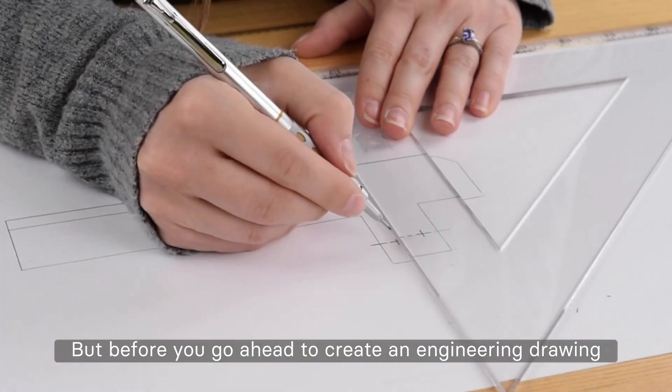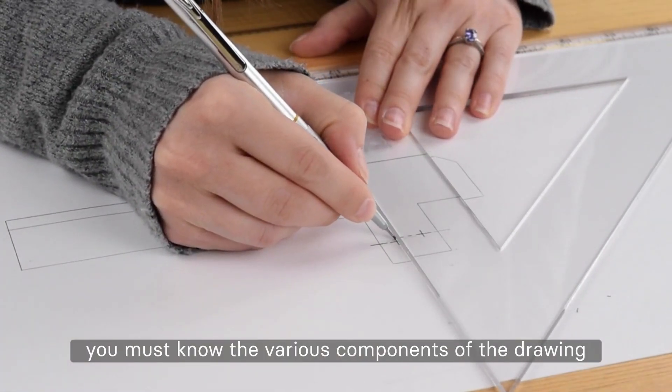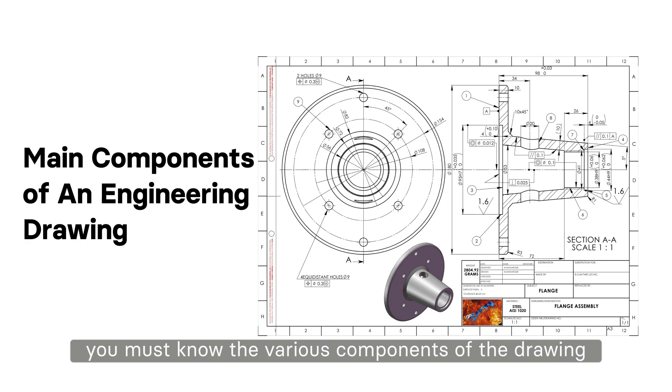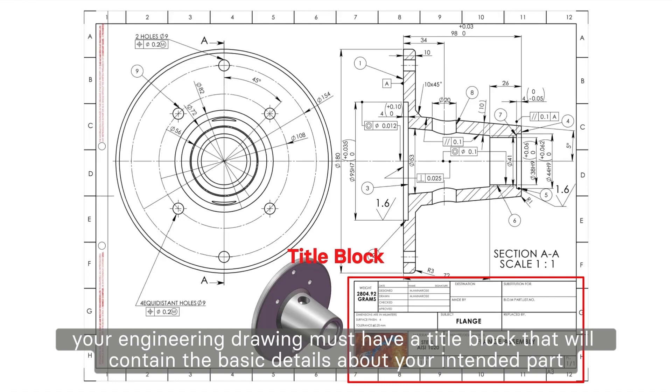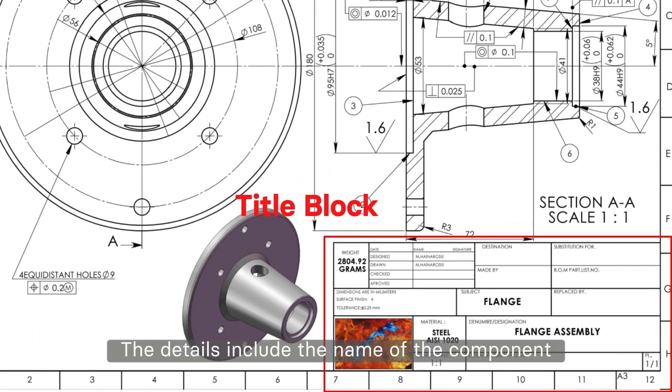But before you go ahead to create an engineering drawing, you must know the various components of the drawing. First, your engineering drawing must have a title block that will contain the basic details about your intended part. The details include the name of the component, material, surface finishing and color requirements, designer's name, and company.